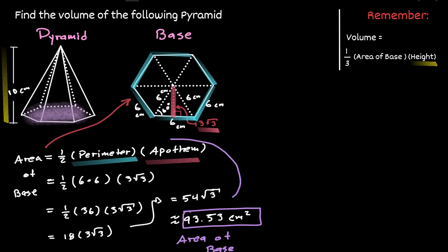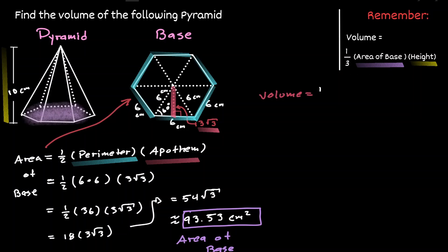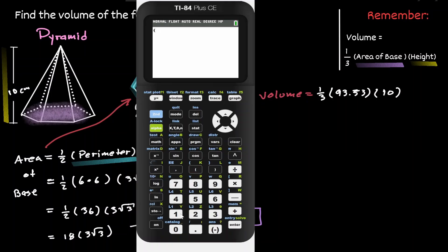Now that we have the area of the base of the pyramid, we can plug that value into our formula to find the volume of this pyramid. The area of the base is 93.53 and the height of the pyramid is 10 centimeters. Using a calculator, we can conclude that the volume of this pyramid is equivalent to 311.76 centimeters cubed.